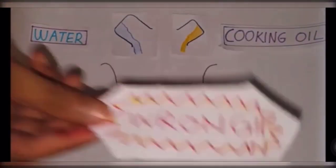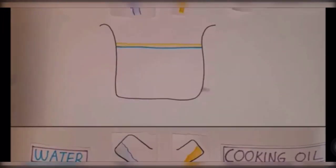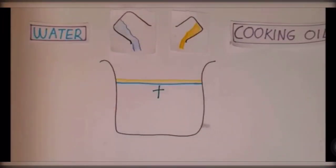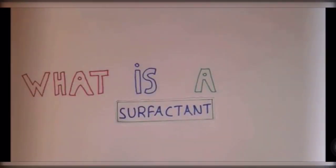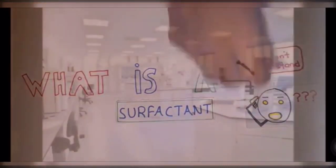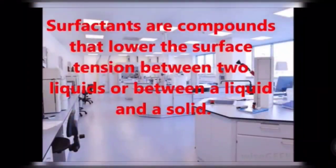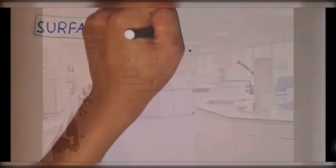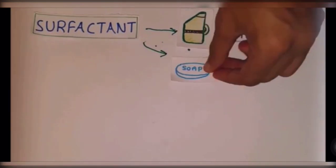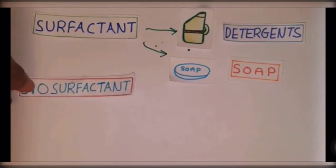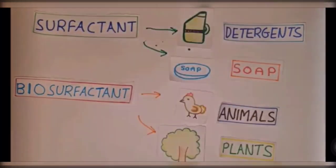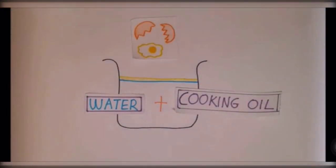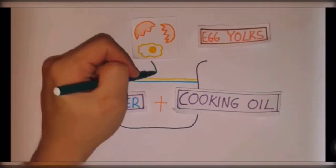We can see that oil and water did not mix. But this statement is not entirely true — we can actually mix them with the help of a surfactant. Surfactants are compounds that lower the surface tension between two liquids or between a liquid and a solid. Surfactants can be obtained from detergents, soaps, and biosurfactants can be obtained from animals and plants. In this experiment, we are going to use egg yolks as a biosurfactant.